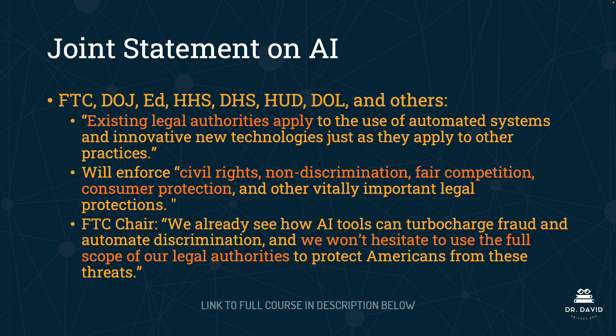In a separate statement alongside the joint statement, the FTC chair said: 'We already see how AI tools can turbocharge fraud and automate discrimination, and we won't hesitate to use the full scope of our legal authorities to protect Americans from these threats.' The major theme is that legal authorities already exist — as statutes or regulations — covering civil rights, non-discrimination, fair competition, and consumer protection, and agencies are using them to protect against adverse impact, adverse selection, and more.